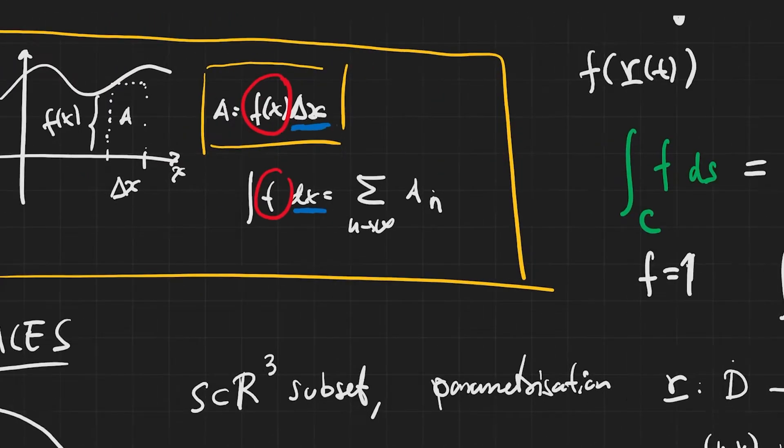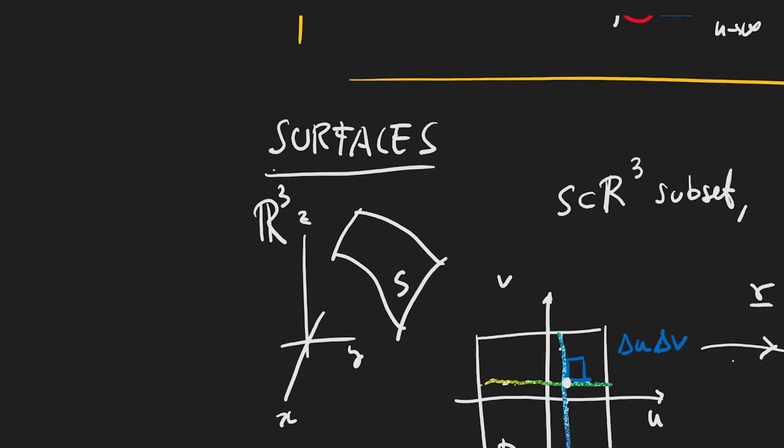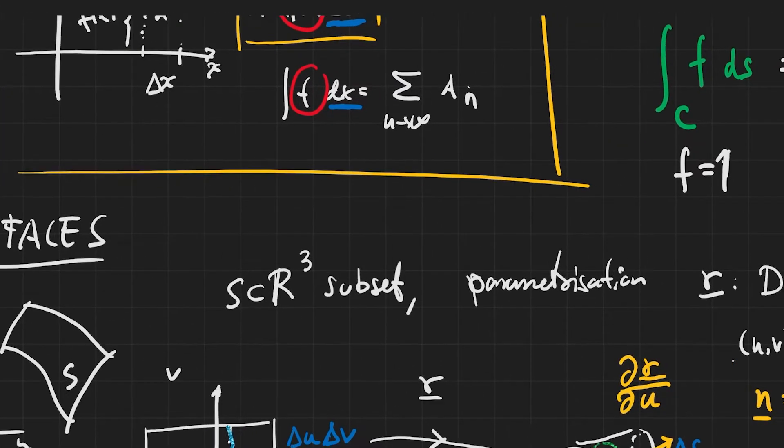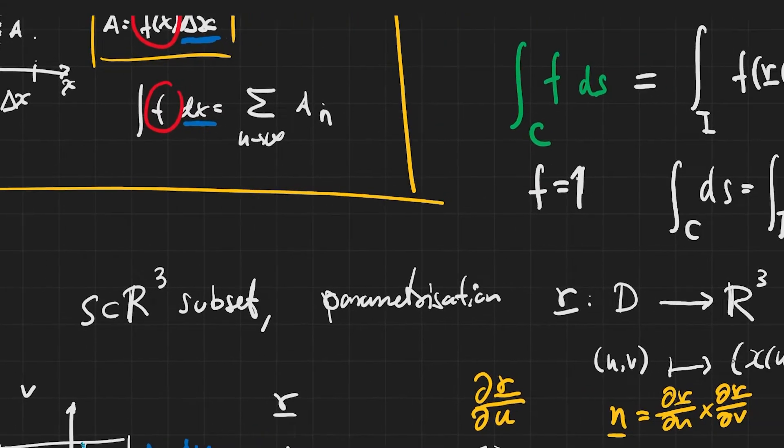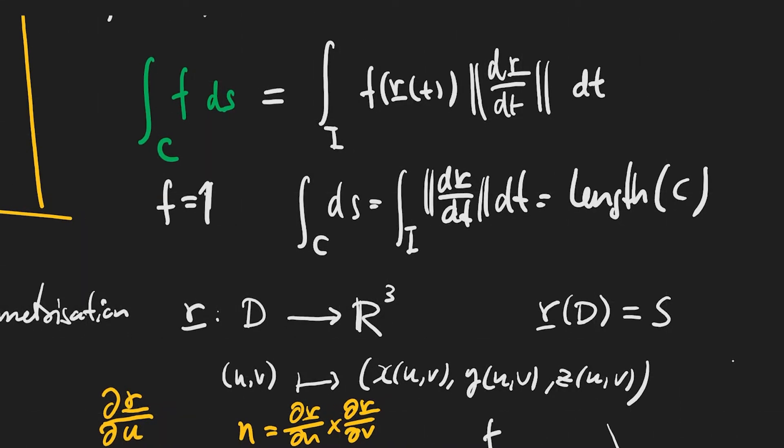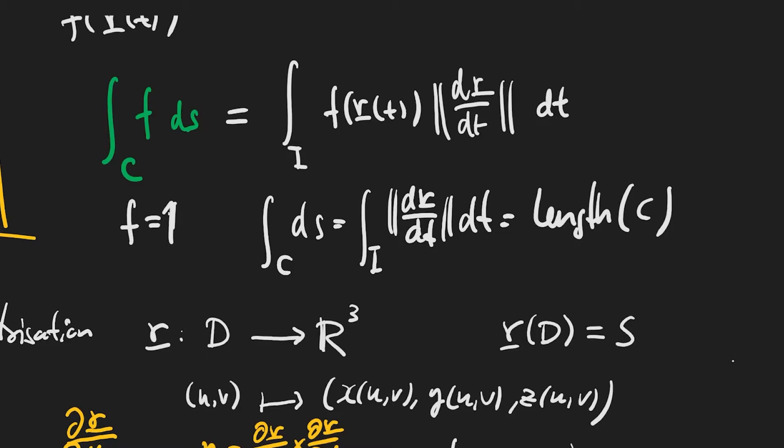So similarly, we can proceed now for a surface where our starting point is indeed some sheet seen in R³, which is again some special subset of R³. And again, we make this precise by saying that it is given by a parameterization, R, sending two parameters this time, u and v, into coordinates x, y, z, in such a way that the image of some region of the UV space of parameters precisely gives S as a set in R³.